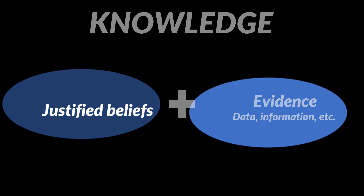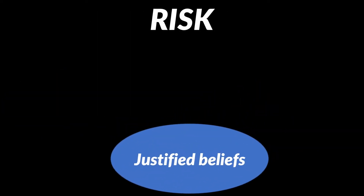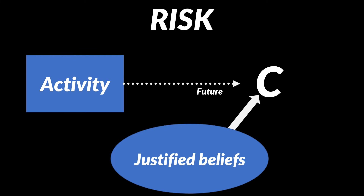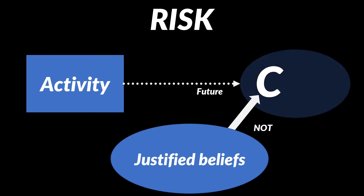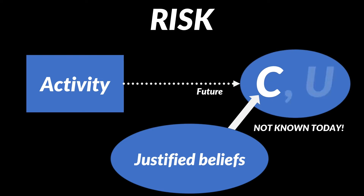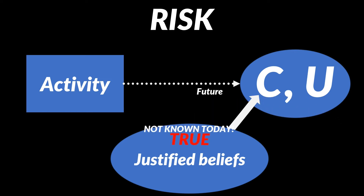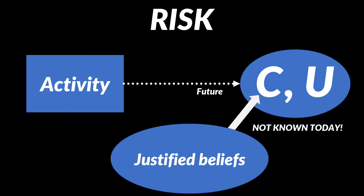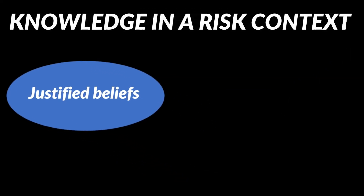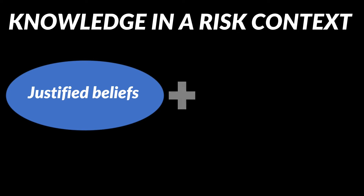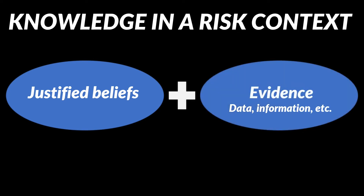So in relation to risk, we can have justified beliefs about C, the consequences of the activity considered. But as C is not known today, there is uncertainty. Hence, knowledge cannot be restricted to true justified beliefs. It must be justified beliefs, and potentially also adding the evidence when looking into knowledge in the broad sense.